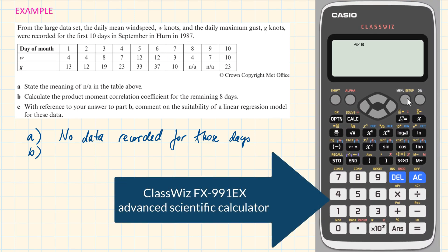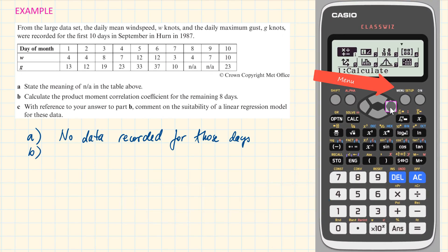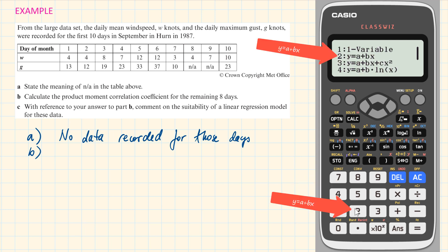On the Casio calculator, go to menu, then choose 6 for statistics. And here we have to choose the linear option, which is number 2, Y equals A plus B X. As you can see it on the screen, we have two columns here, X and Y.